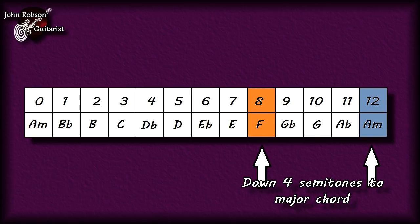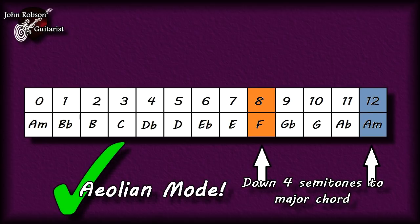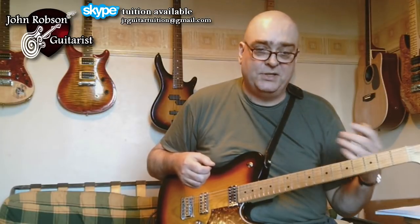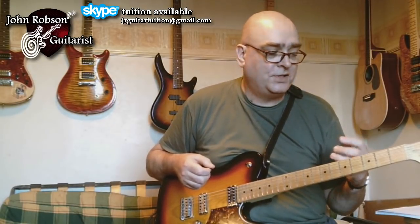If you have a major chord four semitones below your home minor chord, then once again this is the Aeolian mode, as long as you don't have any of the other chords that would rule out the Aeolian mode. So there you have it — that is how to spot whether or not you can use your Aeolian mode licks over the top of any given chord sequence. Just look at the chords in the chord sequence and make those comparisons.